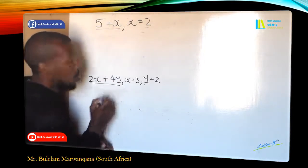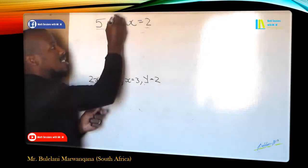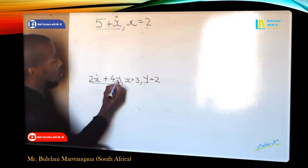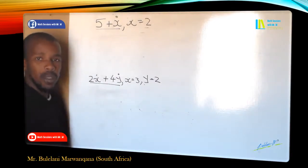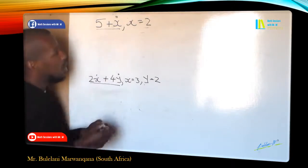Based on this one and also on this one, which is 5 plus X, and therefore an X is a variable. 2X, the X is a variable, plus 4Y, Y is a variable.